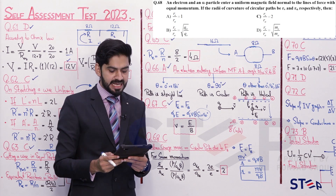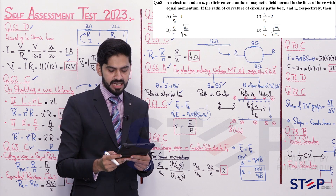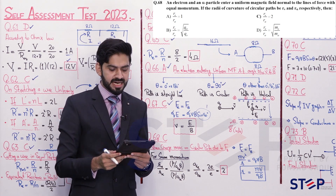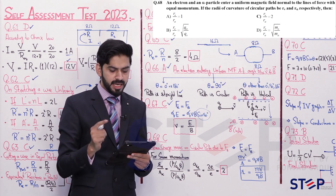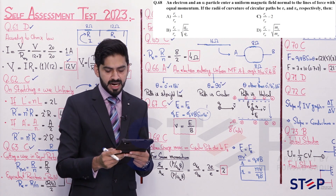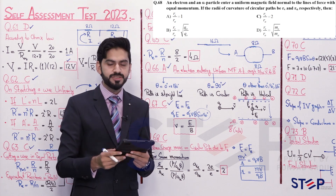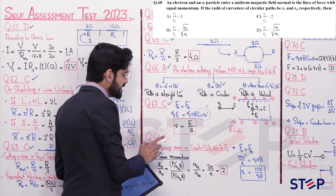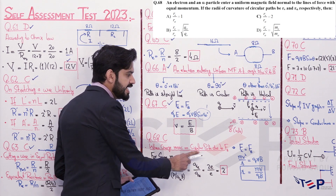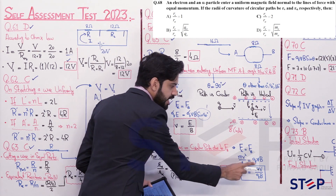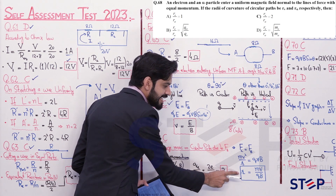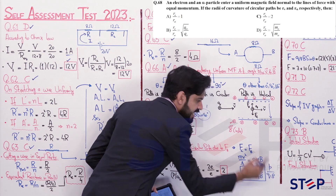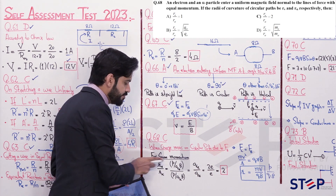Question 68: An electron and an alpha particle enter a uniform magnetic field normal to the field lines with equal momentum. Their radii of circular paths are r_e and r_alpha respectively. For circular motion in a magnetic field, the magnetic force acts as centripetal force. Solving gives: radius r = mv / (qB) = p / (qB), where p is momentum.